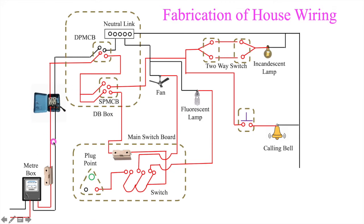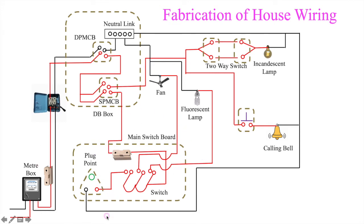In your switchboard there is a three-pin plug point to draw power for any charger or extension. For that purpose, a blank plug point is provided. All together, this is the main switchboard. The circuit is almost complete, including the neutral link for the plug point.